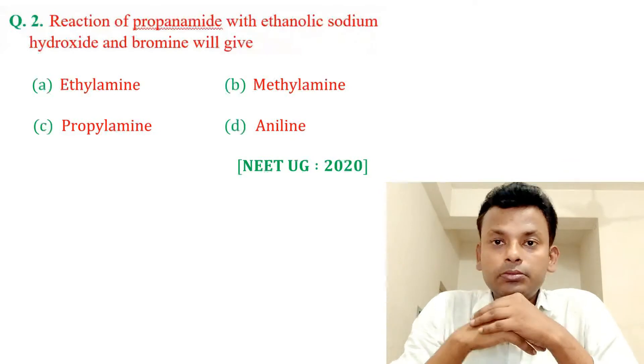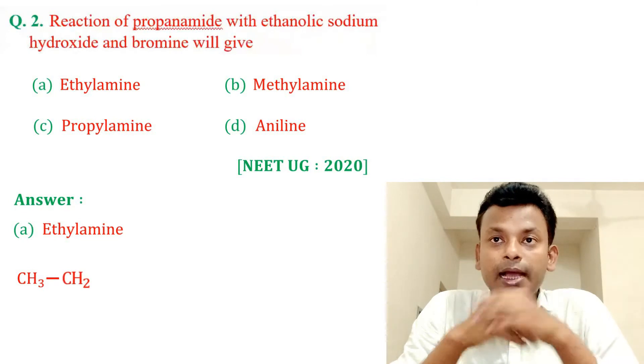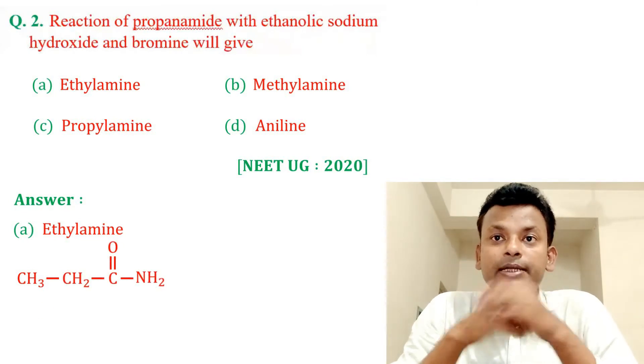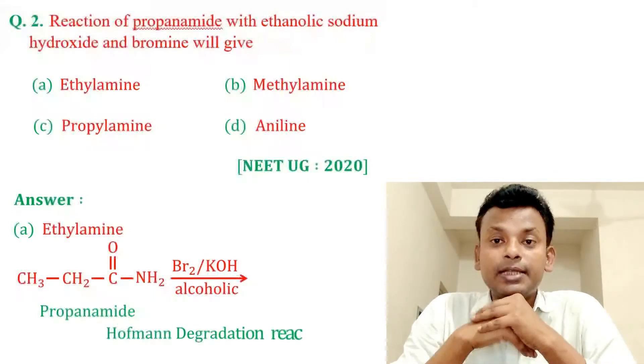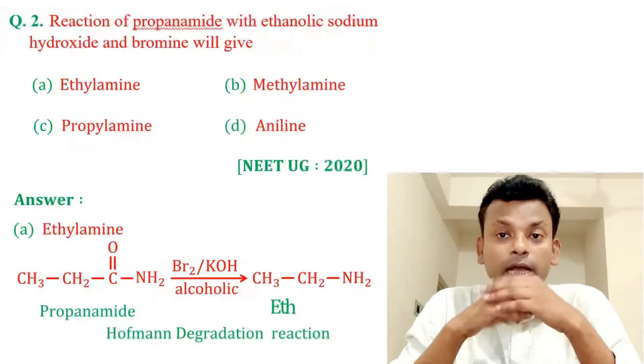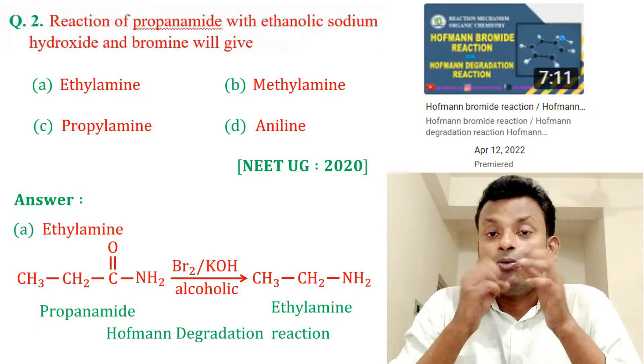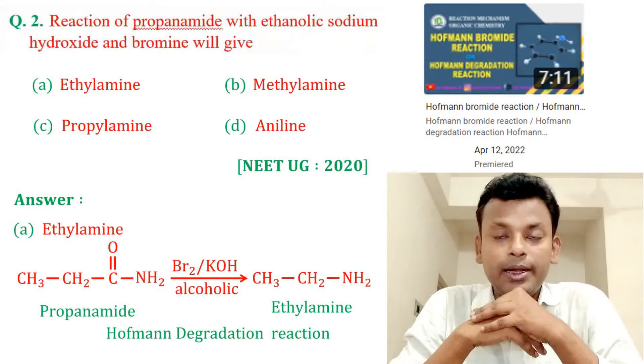Now answer, option A is correct answer. Propanamide reacts with Br2 and KOH in alcoholic medium. It is a Hofmann degradation reaction or Hofmann bromamide reaction, gives ethylamine. We already discussed Hofmann degradation reaction or Hofmann bromamide reaction. You can watch this video for more information about Hofmann degradation or Hofmann bromamide reaction.